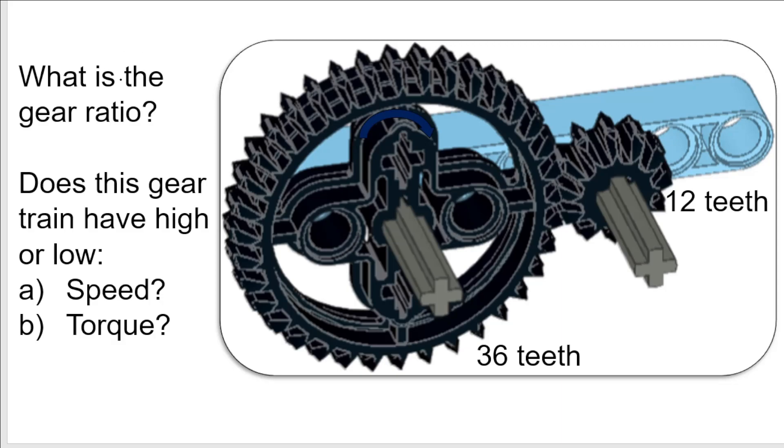The gear ratio for this one is 12 as the output gear and then 36 as the input, which would give us 0.33. And this gear train means that speed decreases by a factor of 0.33, but that's basically saying it increases by a factor of 3 approximately. So that means it has a high speed. And then torque would increase by a factor of 0.33, which means it's basically decreasing by a factor of 3. So that means it has low torque.